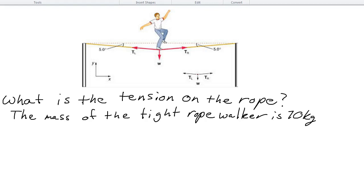This is the first of three tension example problems in your notes. Follow along, try to solve them, and then there'll be some additional problems like these for you to solve on your own. In this problem we have a tightrope walker standing on a rope. The problem asks us what the tension on the rope is, and the information given is that the tightrope walker has a mass of 70 kilograms.